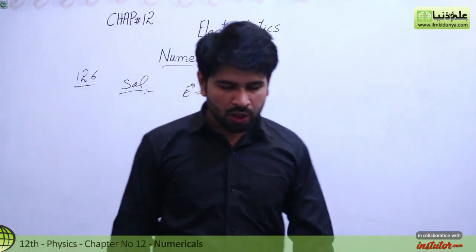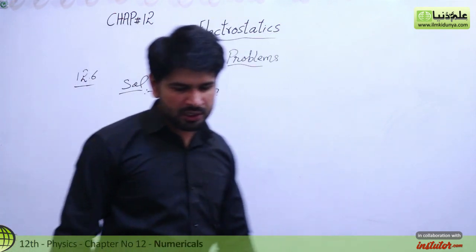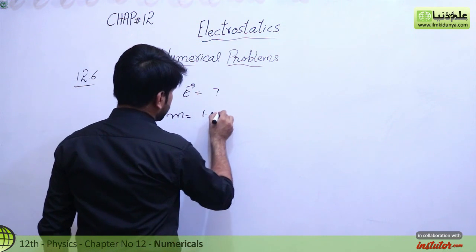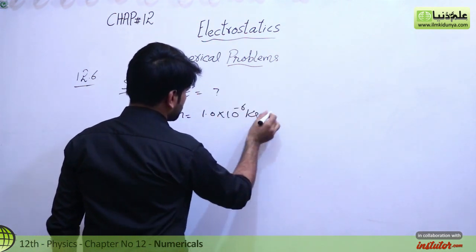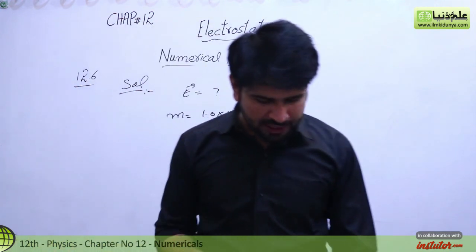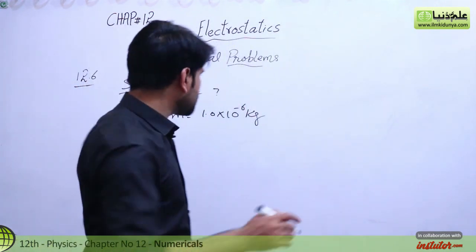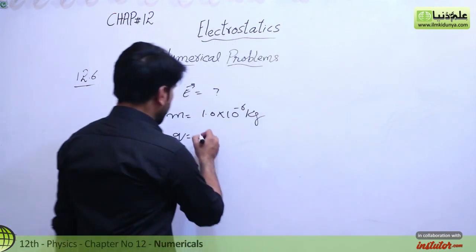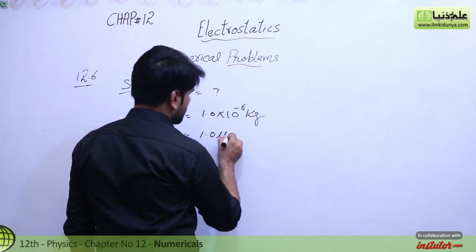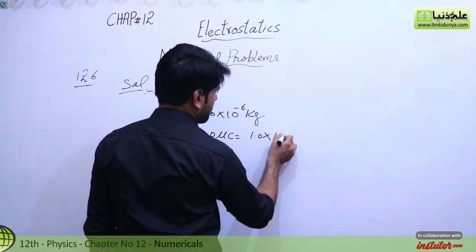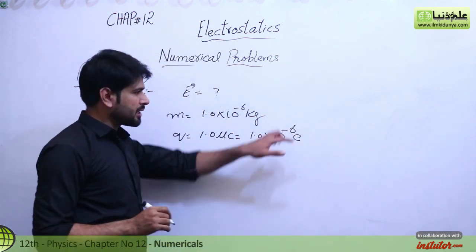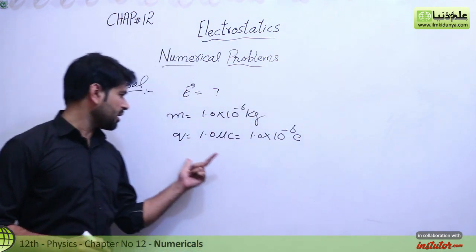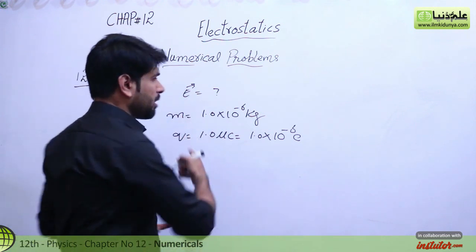What is given? We have mass m which is 1.0 times 10 raised to power minus 6 kg. We also have the charge given as 1.0 microcoulomb. We can write 1.0 microcoulomb as 1.0 times 10 to the power minus 6 coulombs. So we have mass 1.0 times 10 raised to power minus 6 kg and charge to find out E.